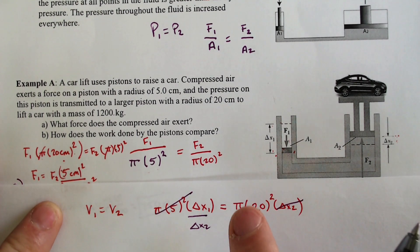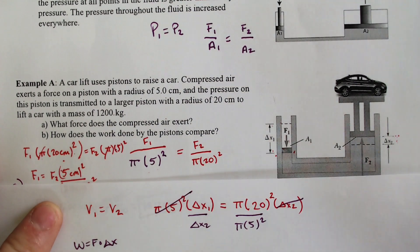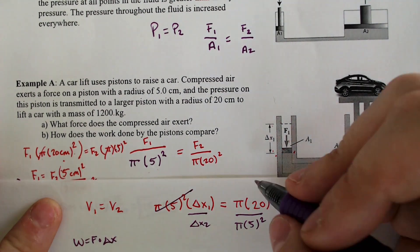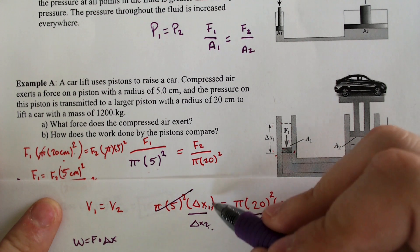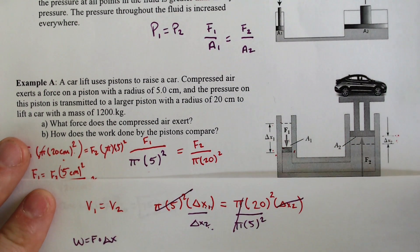So now we have a relationship between the change in height, which is the displacement, which we need for work because work is equal to force times displacement, which is delta x. So we now have an increment of how we can figure out the delta x's at least.